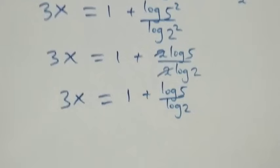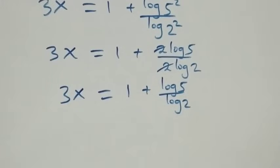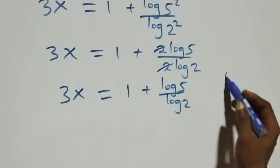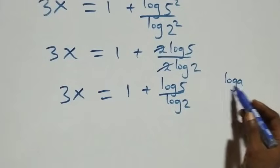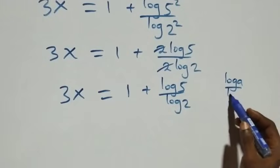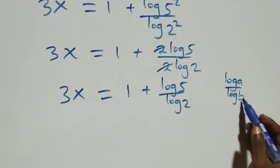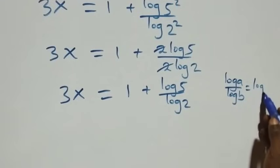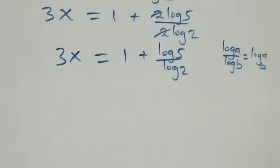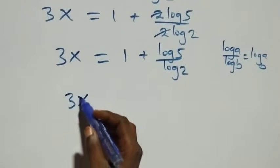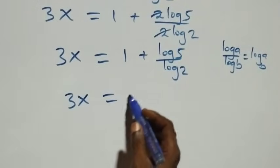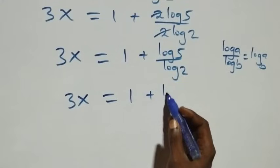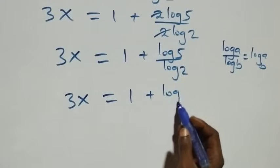The next step: we apply the change of base rule. When we have log A over log B, this is the same thing as log A to base B. So what we have becomes 3x equals to 1 plus log 5 to base 2.